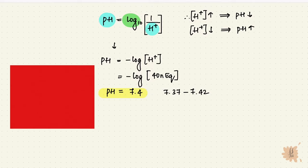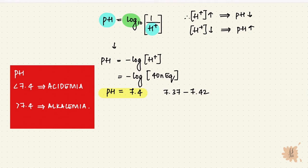If the pH is less than 7.4, that means hydrogen ions are high and it's acidemia. If it's more than 7.4, hydrogen ions are low and it's alkalemia. That was the plasma. A side note: the pH inside the cell is a little lower, at 7.2.